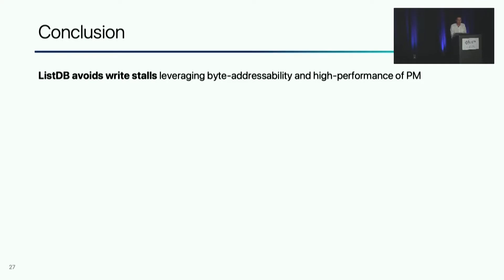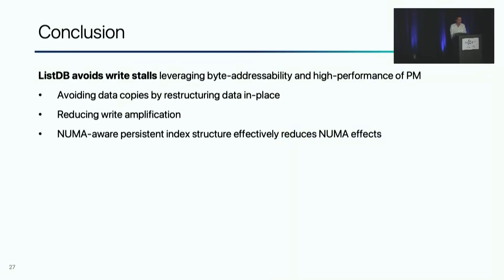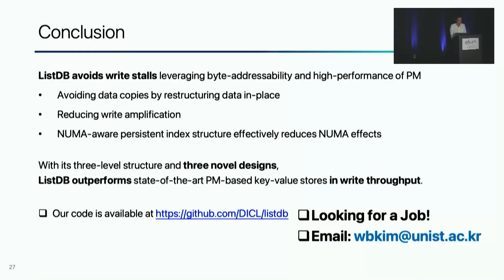In conclusion, ListDB avoids write stalls by leveraging the characteristics of persistent memory. With byte addressability and high performance of persistent memory, ListDB can avoid data copies by restructuring data in place and reduce write amplification. Also, our NUMA-aware braided skiplist reduces NUMA effects effectively. As a result, ListDB outperforms state-of-the-art PM-based key-value stores in terms of write throughput. The code is available on GitHub. Thank you.